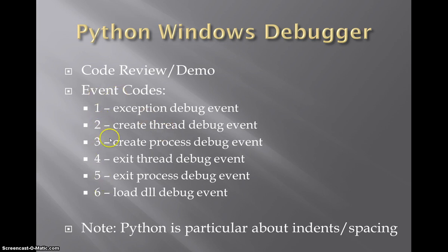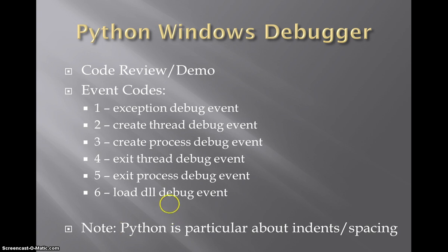We'll see these event codes in action. They're going to tell us things like an exception debug event has happened, create thread debug event, create process, load DLL debug, and things like that. One thing to note - I did most of my development in Eclipse, but recently moved into just Notepad to be a little bit quicker. Python is particular about indent spacing and how the code is structured - the interpreter expects it a certain way.